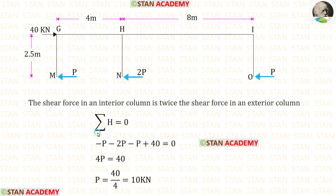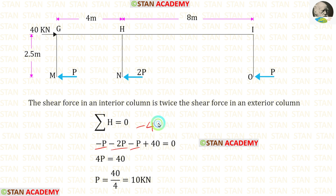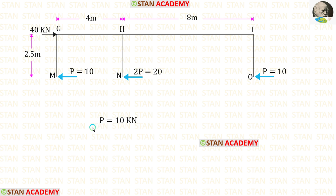Now let us apply ΣH = 0 and find P. The three shear forces act towards the left side so they are negative; the load acts towards the right so it is positive. Adding the three gives minus 4P. Taking that to the other side, we get P = 10 kN. So at points M and O we have a shear force of 10 kN, and at the interior column 2P = 20 kN.